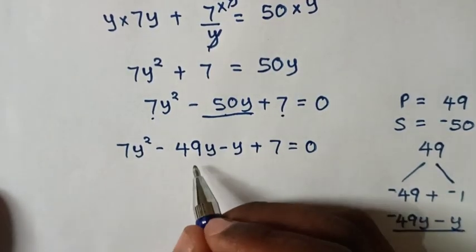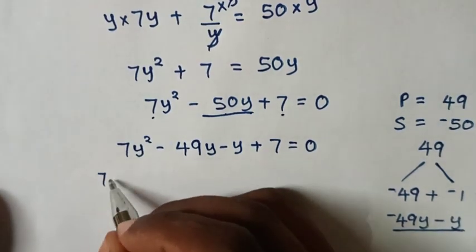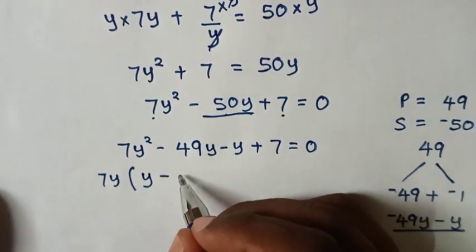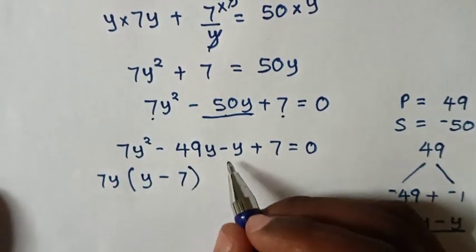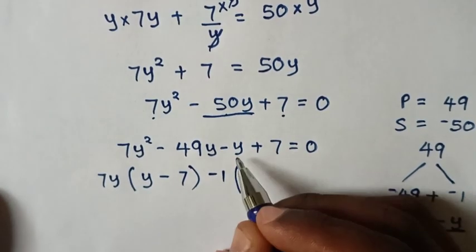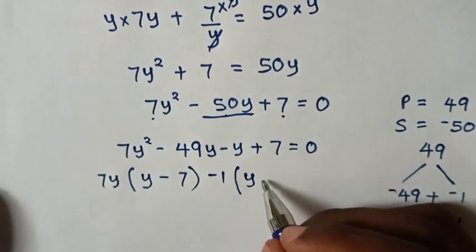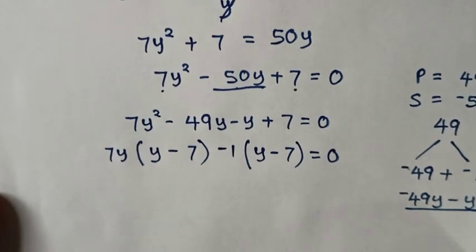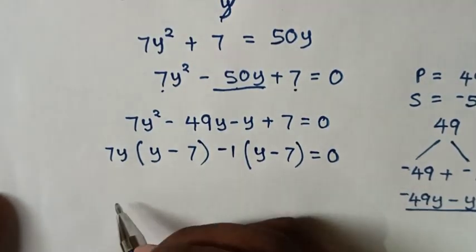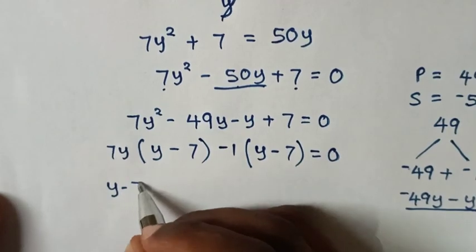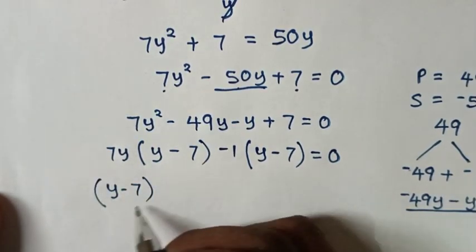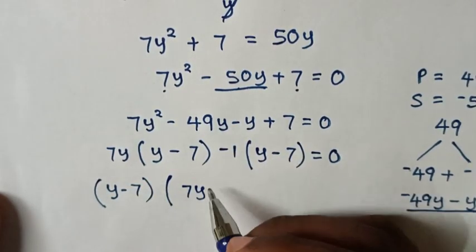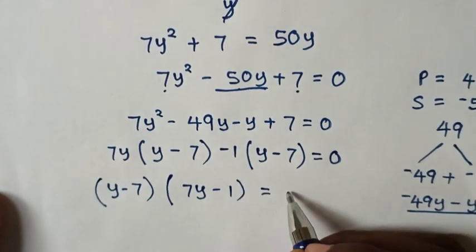In the first two terms, 7y is common, so we factor out 7y to get 7y(y - 7). In the last two terms, -1 is common, giving -1(y - 7). So the equation becomes (y - 7)(7y - 1) = 0.